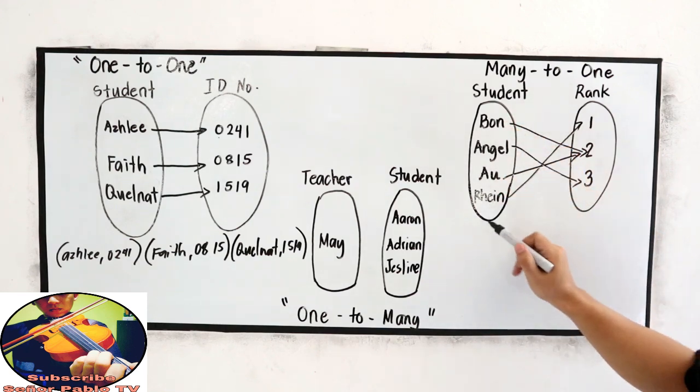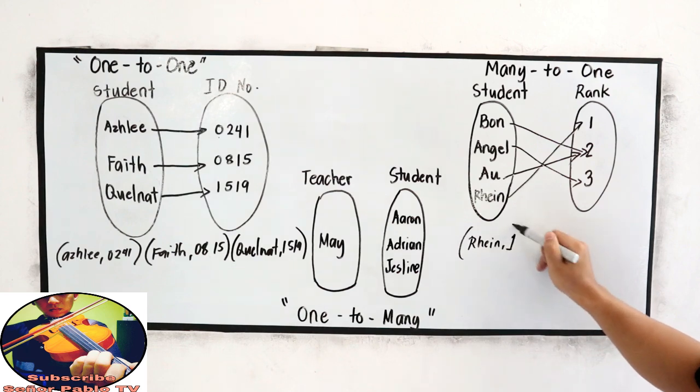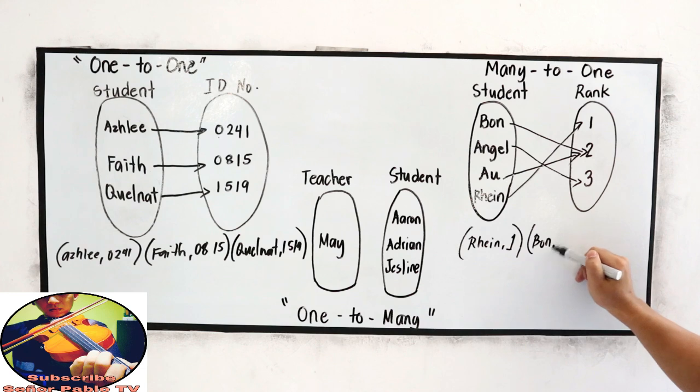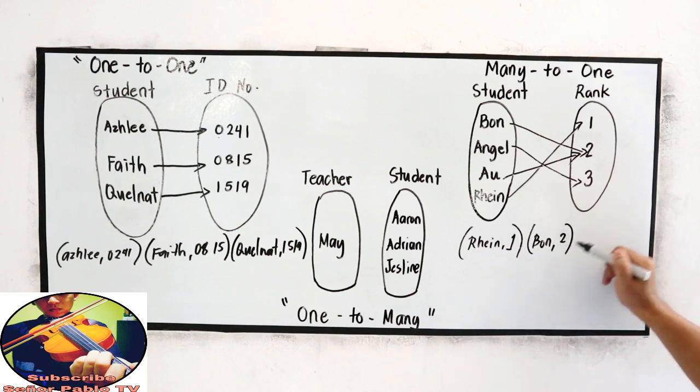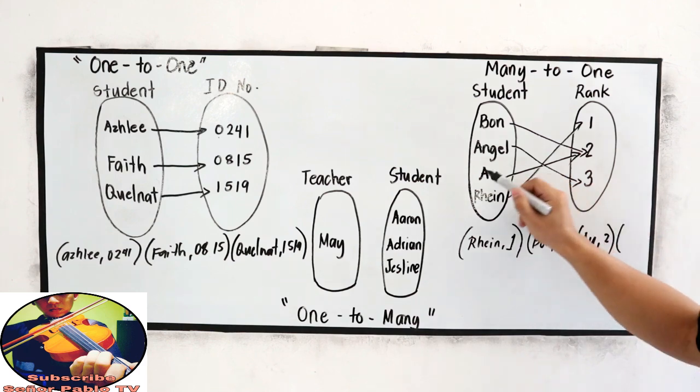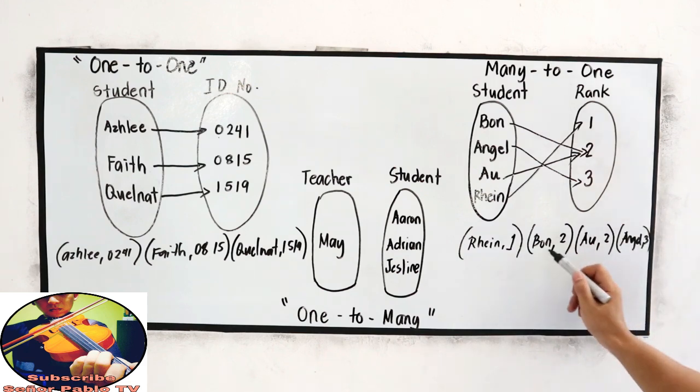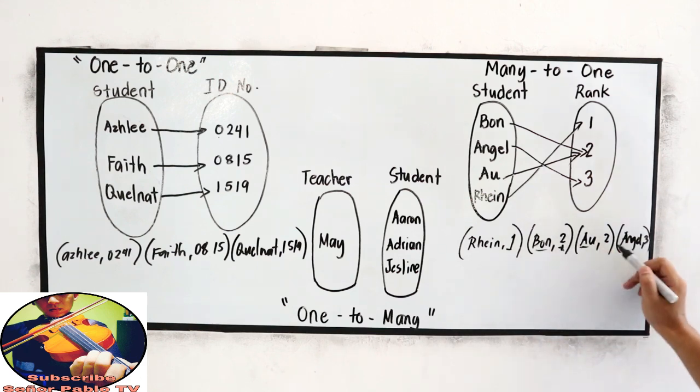So, if we're going to write this as ordered pairs, that is Rain 1, Bon 2, Au 2, and Angel 3. So, many as our domain, then one as the range.